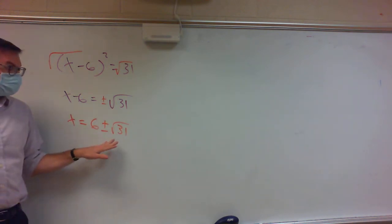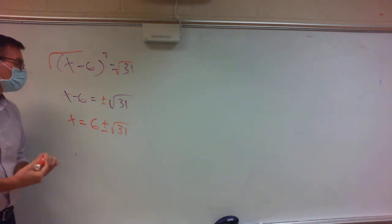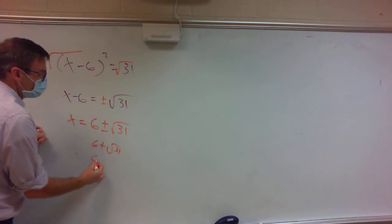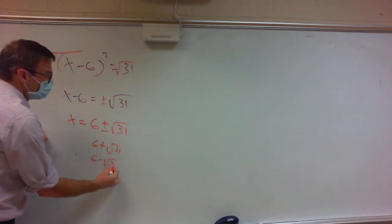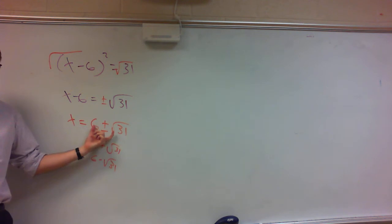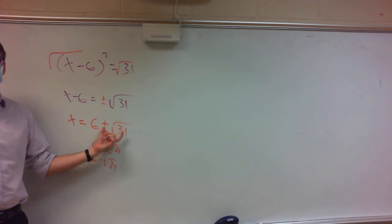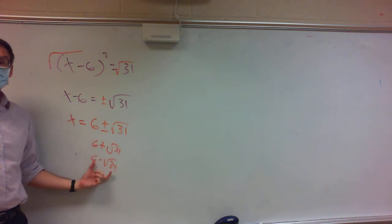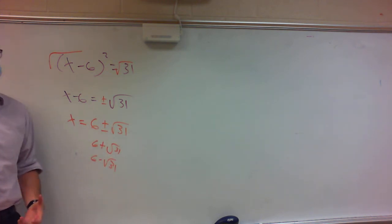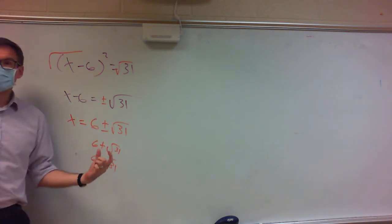Believe it or not, that's how I want your answer. This technically represents 6 plus the square root of 31, and 6 minus the square root of 31. But for practical purposes you can leave it as 6 plus or minus the square root of 31. Notice you do get two answers. If you typed this in your calculator you'd get ugly decimals — I want your answers in terms of square roots.